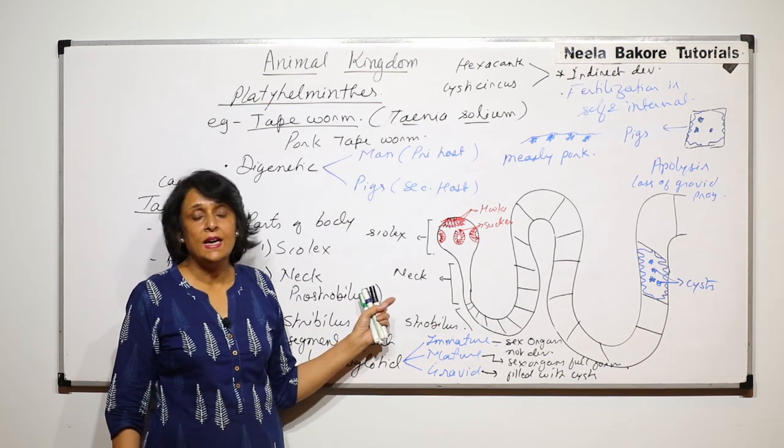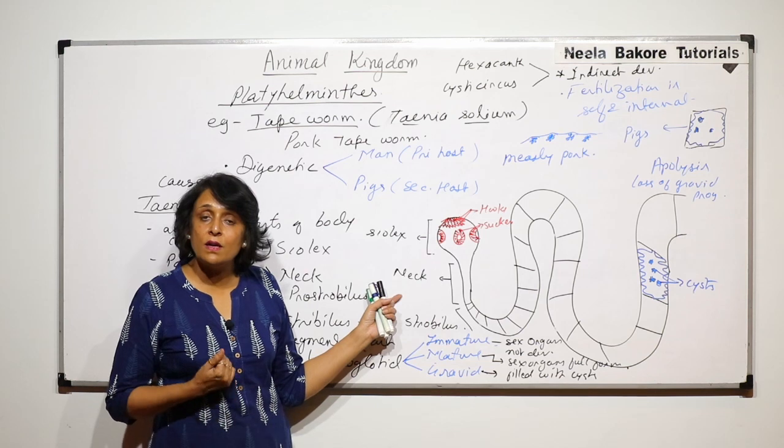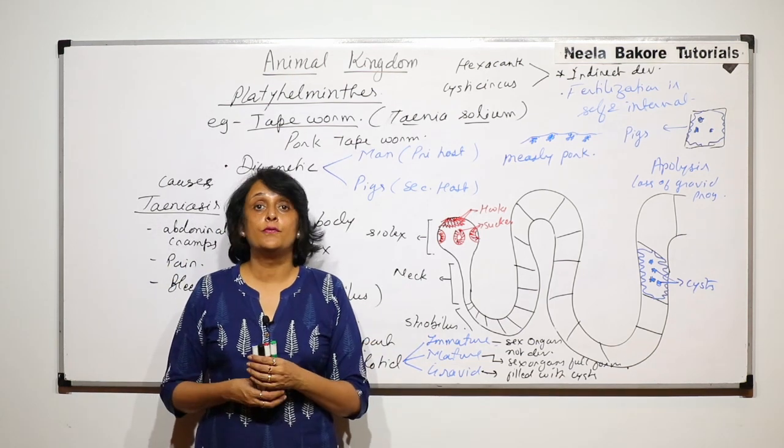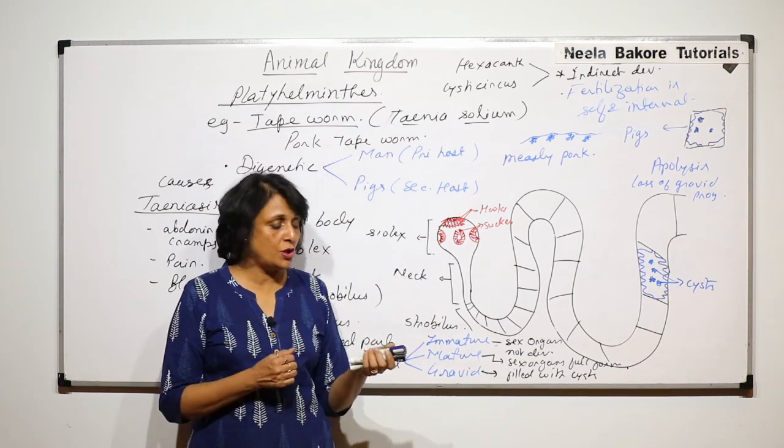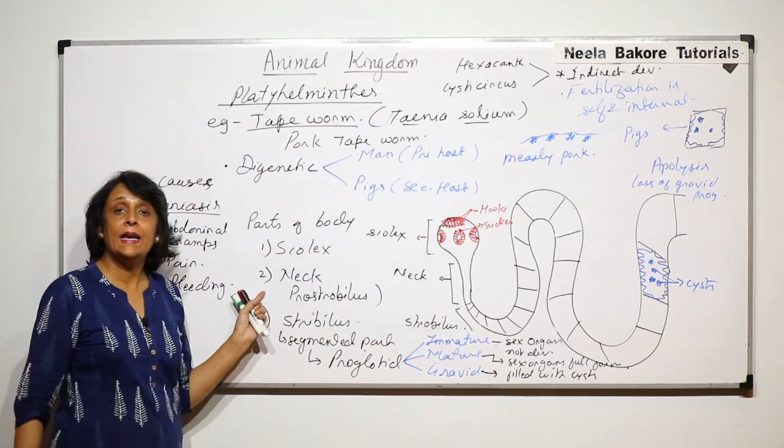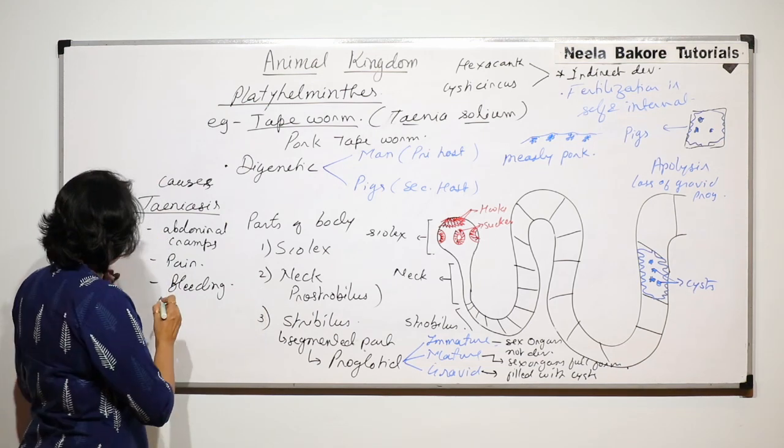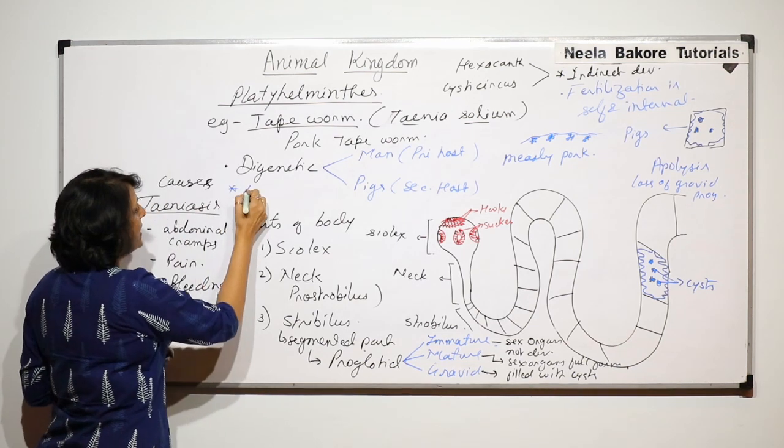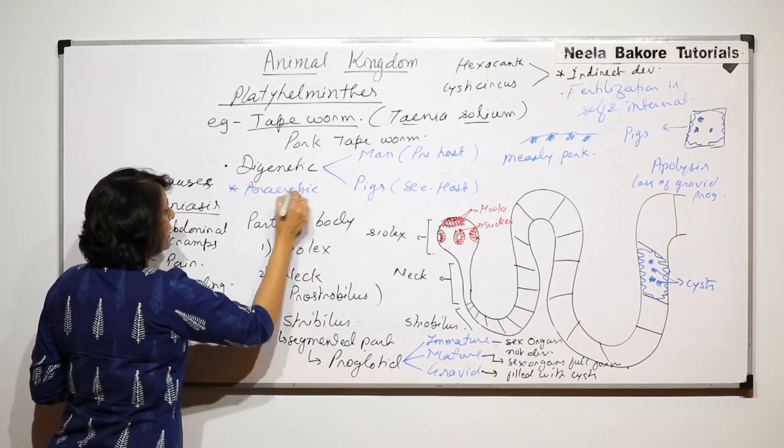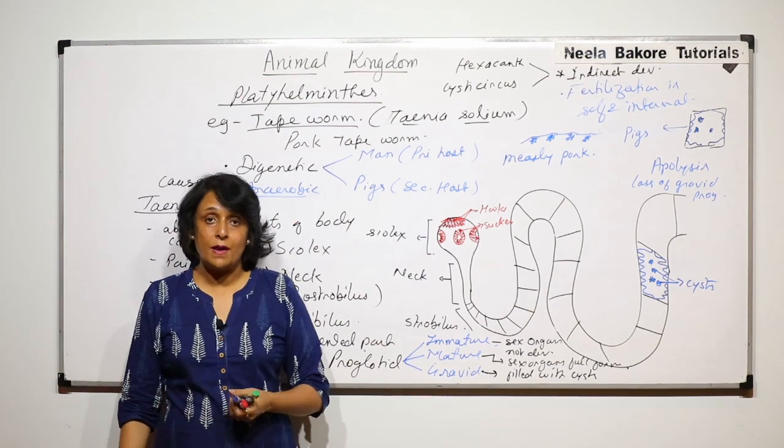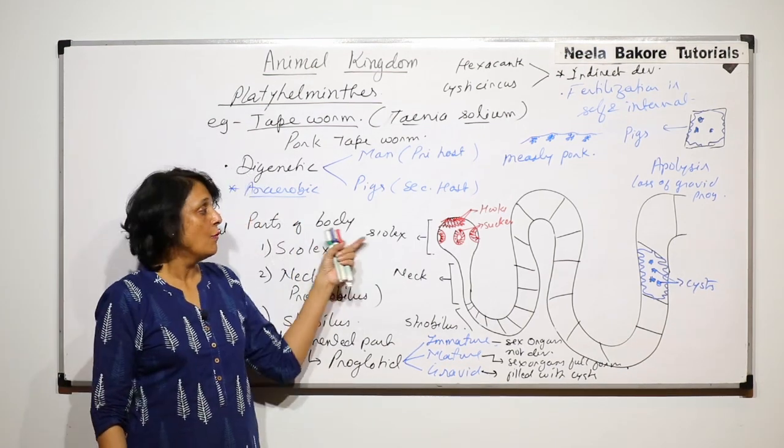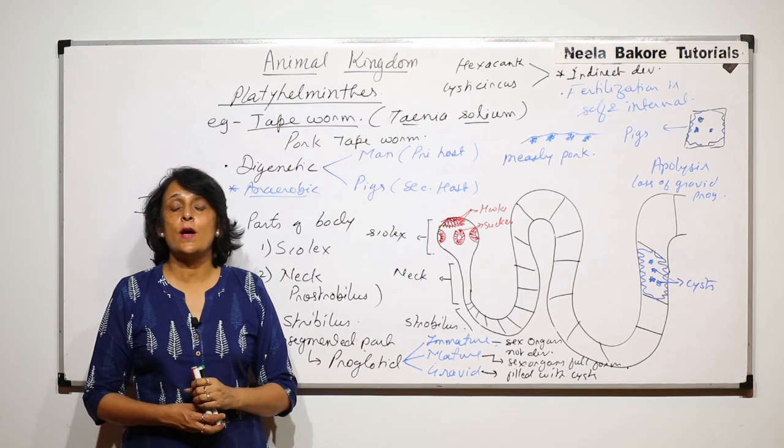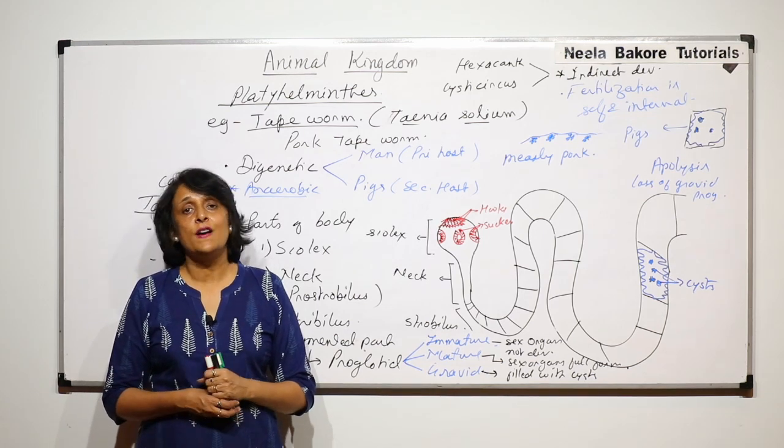So this is an endoparasite. Digestive system is not there because it is absorbing the complete digested material. Excretion is in the form of ammonia and they have flame cells which excrete that. And as it is found inside of our alimentary canal, these tapeworms are anaerobic because there is no molecular oxygen available in the intestinal part where they are attached. So they lead their life as anaerobic organisms. So this is one very important example of platyhelminth.